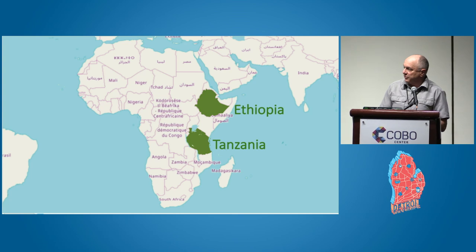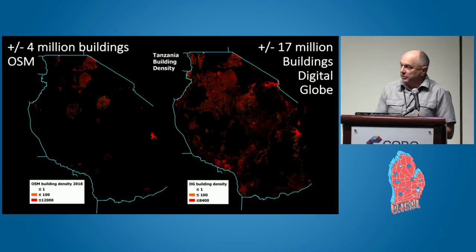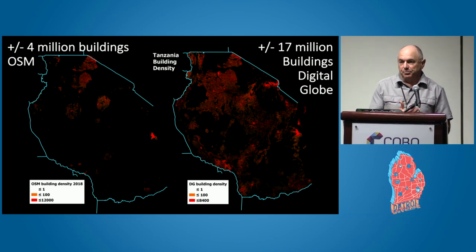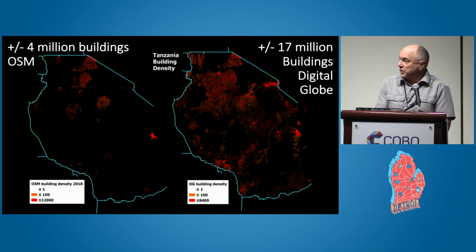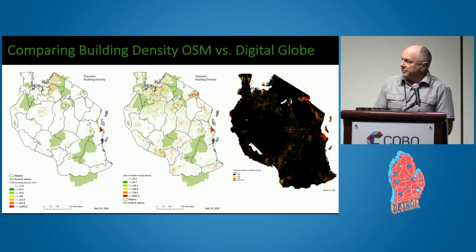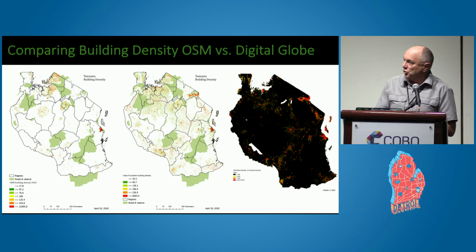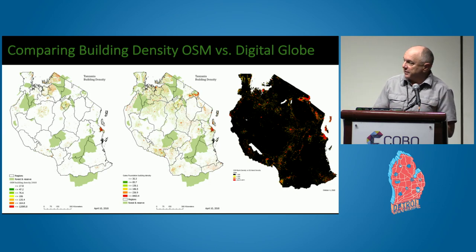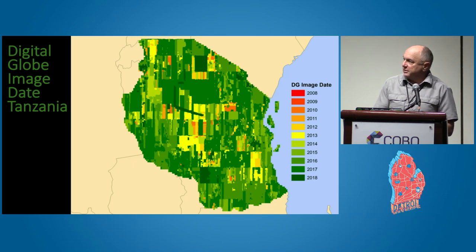Just for reference, here's the OpenStreetMap view with Ethiopia and Tanzania superimposed. Through the Tanzania Development Trust we received 17 million building footprints created by DigitalGlobe, extracted from their imagery. On the left are the OSM buildings as of April, compared to the 17 million DigitalGlobe buildings. Another view shows OSM buildings on the left, DigitalGlobe in the center, and the right shows the subtraction — the differences. The colors highlight where OSM does not have buildings. Arusha is that bright red corner in the north-east. The green areas are reserves, so there really shouldn't be any buildings there.